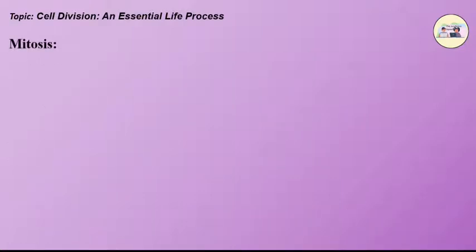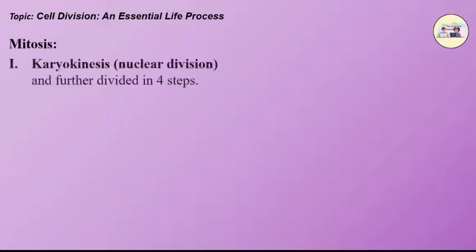Mitosis is completed through two main steps. The first is karyokinesis. Karyokinesis is a nuclear division and it further divides into 4 steps.